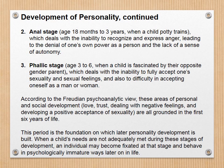Third is the phallic stage, ages 3 to 6, when a child is fascinated by their opposite-gender parent. This deals with the inability to fully accept one's sexuality and sexual feelings, and difficulty in accepting oneself as a man or woman. When you interview gay or transgender people, they will say they remember as far back as 4, 5, or 6 years old feeling different from others in their peer group. According to the Freudian view, these areas of development — love, trust, dealing with negative feelings, and developing positive acceptance of sexuality — are all grounded in the first six years of life.